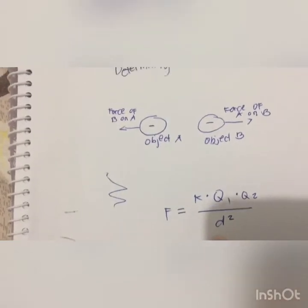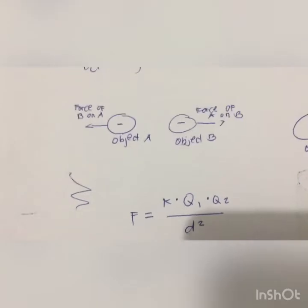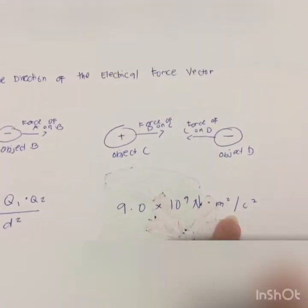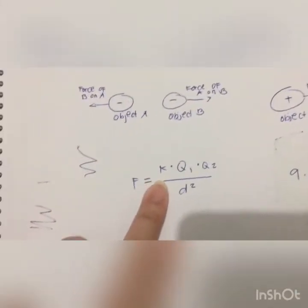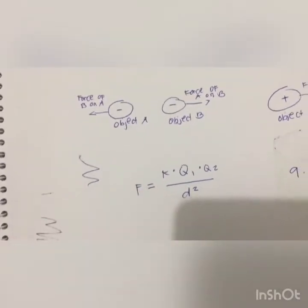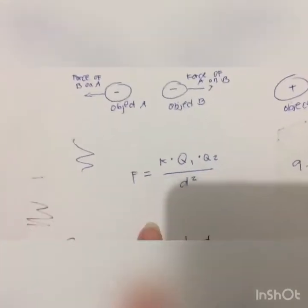The value of Coulomb's constant is dependent upon the medium in which the charged objects are immersed. In the case of air, the value is approximately 9.0 × 10⁹ N·m²/C². If the charged objects are in water, the value of k can be reduced by as much as a factor of 80. The units on k are such that when substituted into the equation, the units on charge (Coulombs) and distance (meters) cancel out, leaving Newtons as the unit of force. Coulomb's Law applies most accurately to point charges. A charged conducting sphere interacts with other charged objects as though all of its charge were located at its center, so the distance d in the equation is the distance between the centers of charge of both objects, not the distance between the nearest surfaces.